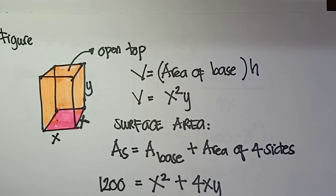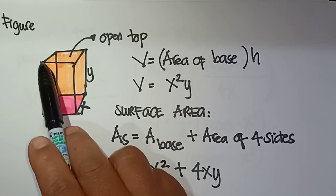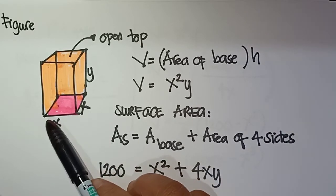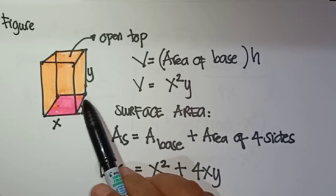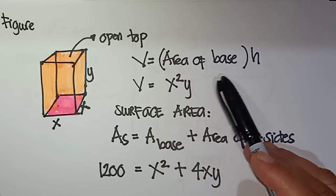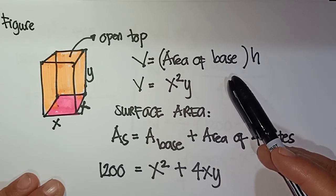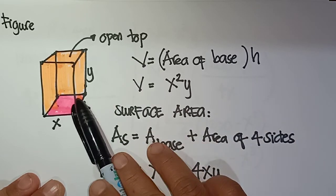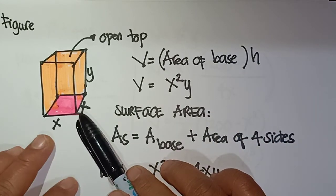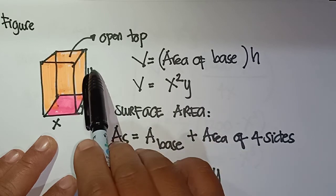We draw the figure — a rectangular box with a square base. Since it has a square base, the base has equal lengths, which we denote as x, and the height as y. The formula for volume is area of base times height. For our problem, the area of the base is x squared, so Volume equals x squared times y.